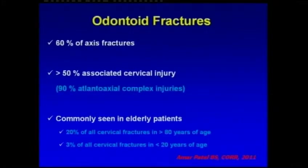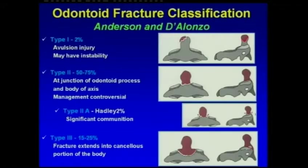60% of axis fractures are odontoid fractures, with more than 50% having associated cervical injury, most commonly atlanto-axial complex injury. It is commonly seen in elderly patients. According to Anderson and Alonso, there are three fracture types, and the most common type is type 2.